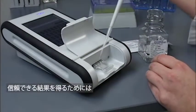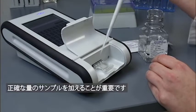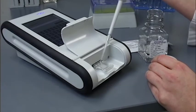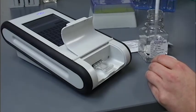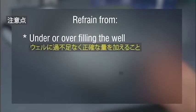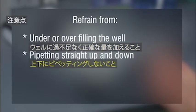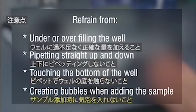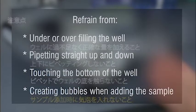For reliable results, it is important that you pipette the sample correctly. You need exactly 100 microliters of sample before the test is started. Do not under or overfill the well, and do not pipette straight up and down. It is best to pipette at an approximate 45 degree angle, not touching the bottom of the well. Also, be careful not to create bubbles when adding the sample. Be sure not to touch the sample wells on the cartridge.